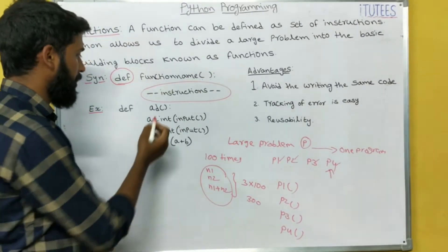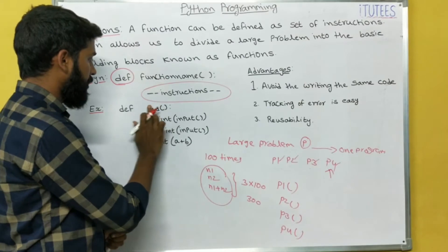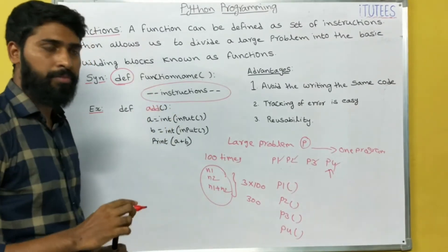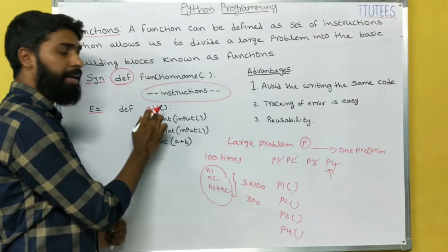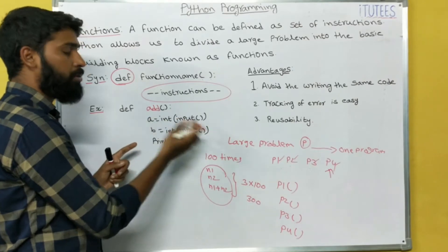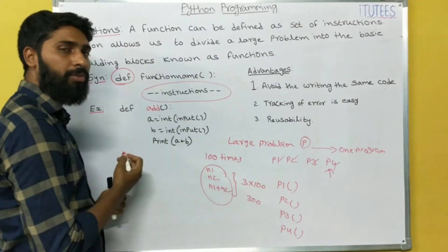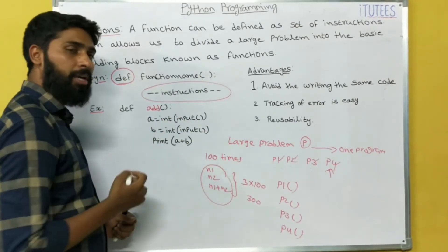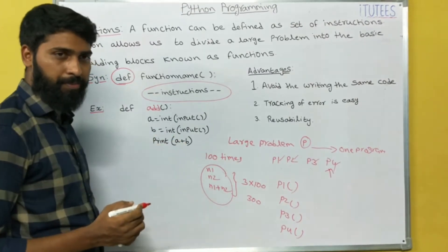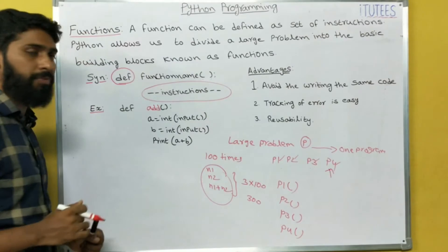So this is the example. I am defining a function add. In this function I am writing the code a equals to integer input, that means I want to read the value from the keyboard. B also I am going to read the value from the keyboard. Print a plus b.